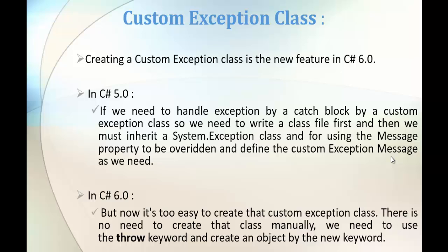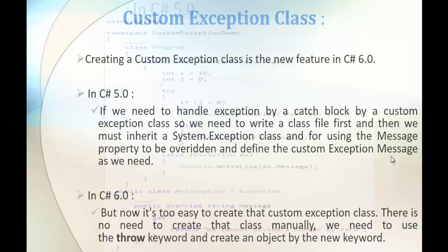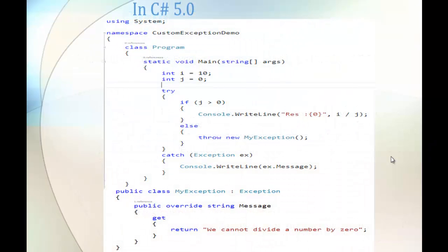In C-Sharp v5, if we need to create a Custom Exception Class, what we used to do first was create a class and inherit the Exception Class — System.Exception. Then if we needed to write the Message property, we would override that property and define our own custom exception message. That's how we were doing it in C-Sharp v5, and here is the image which explains clearly how we were creating a Custom Exception Class in v5.